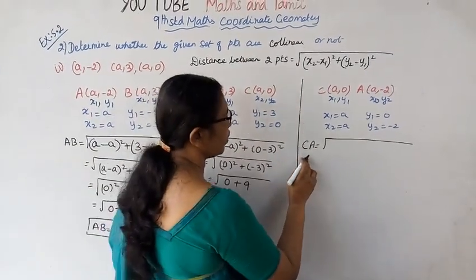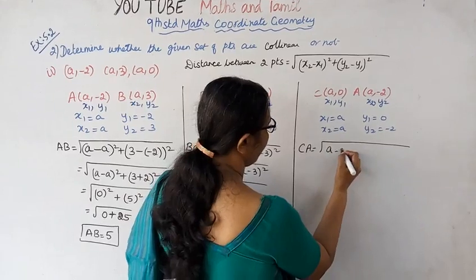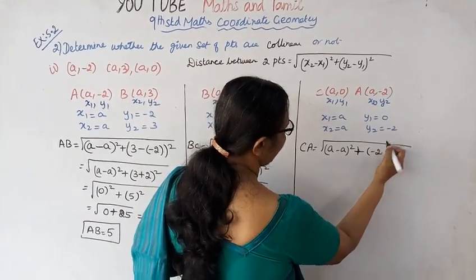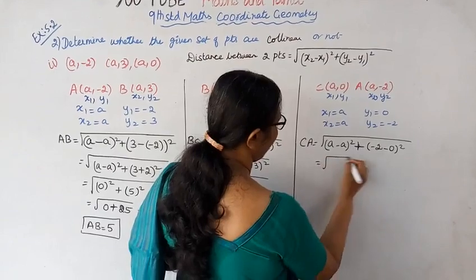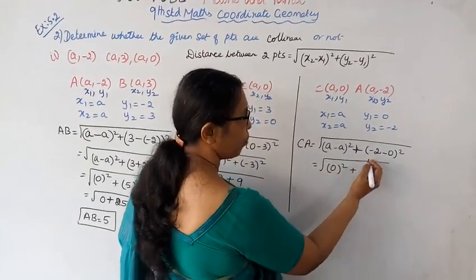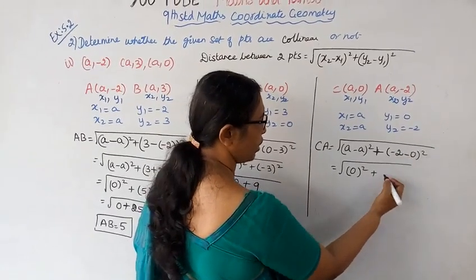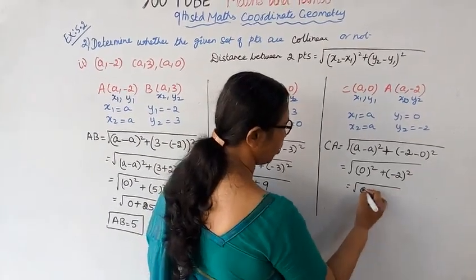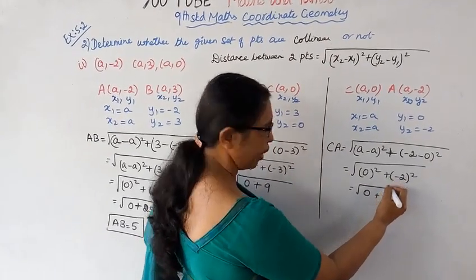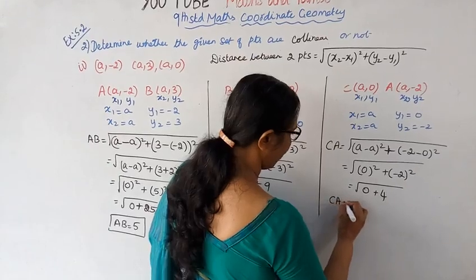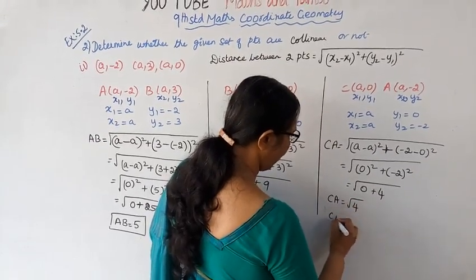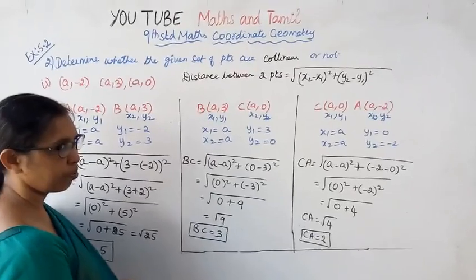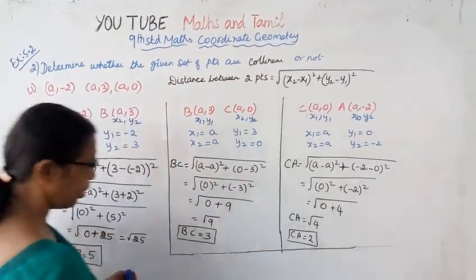For distance CA: (x2 minus x1) whole square plus (y2 minus y1) whole square. y2 is minus 2, so (minus 2 minus 0) whole square, plus (a minus a) 0 whole square. That equals root of 0 plus (minus 2) whole square. Minus 2 into minus 2 is 4. So CA equals square root of 4, which equals 2.